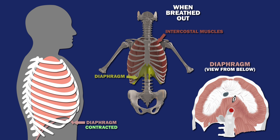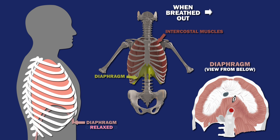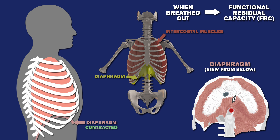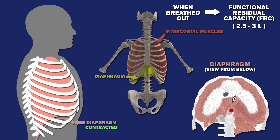When you've breathed out, the volume of air remaining in your lungs is called the functional residual capacity, or FRC, which is around 2.5 to 3 liters in an adult.